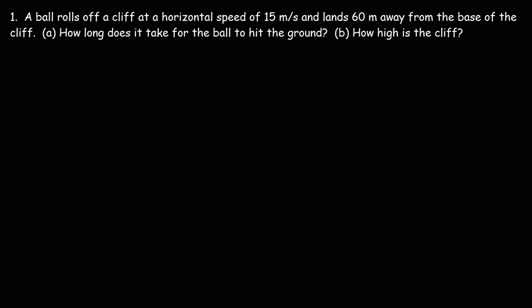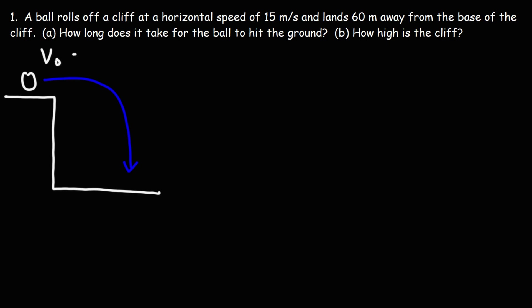Let's work on this problem: a ball rolls off a cliff at a horizontal speed of 15 meters per second and lands 60 meters away from the base of the cliff. How long does it take for the ball to hit the ground? Let's begin by drawing a picture. We have a cliff, the ball rolls horizontally off the cliff, and then it hits the ground. We know the initial speed is 15 meters per second and the range — the horizontal displacement — is 60 meters.